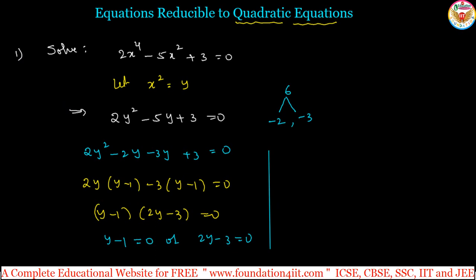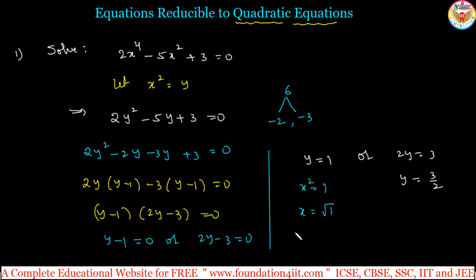Then just substitute back. y is equal to x squared. So y equals 1 or 2y equals 3, that means y equals 3 by 2. Now, what is the value of y? It's x squared. According to this, x squared equals 1, then x equals square root of 1, therefore x equals plus or minus 1. Same way, x squared equals 3 by 2.